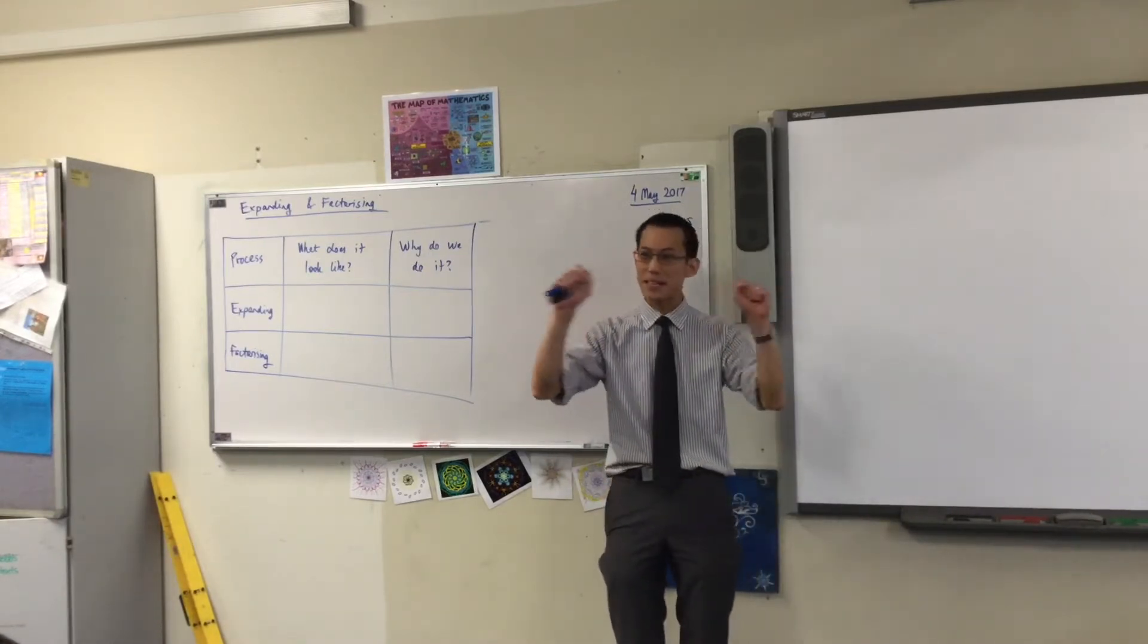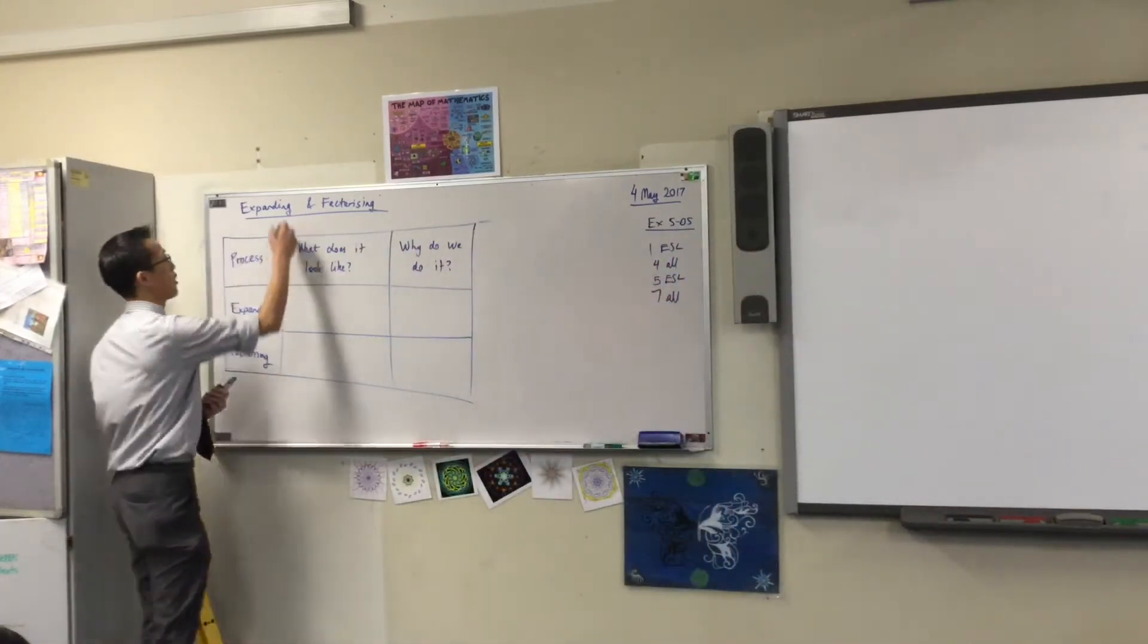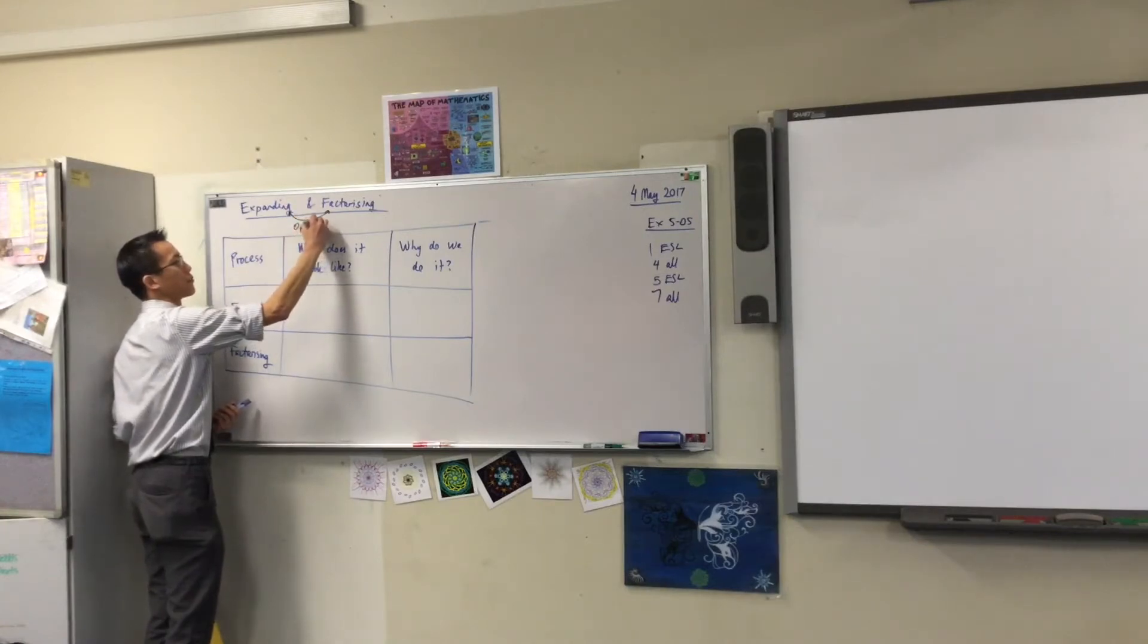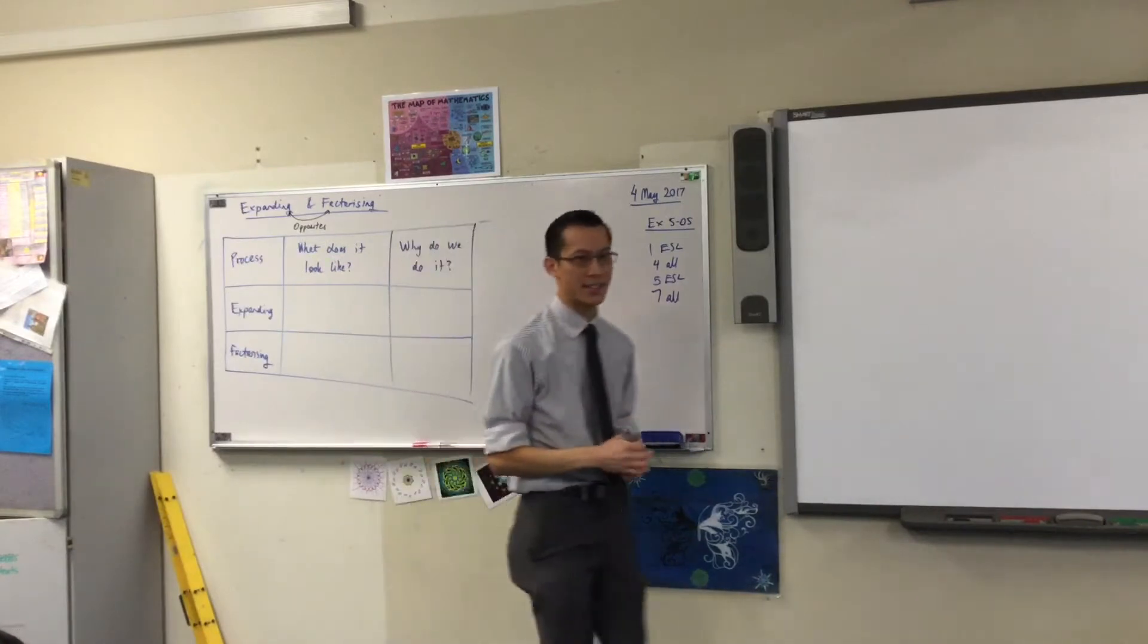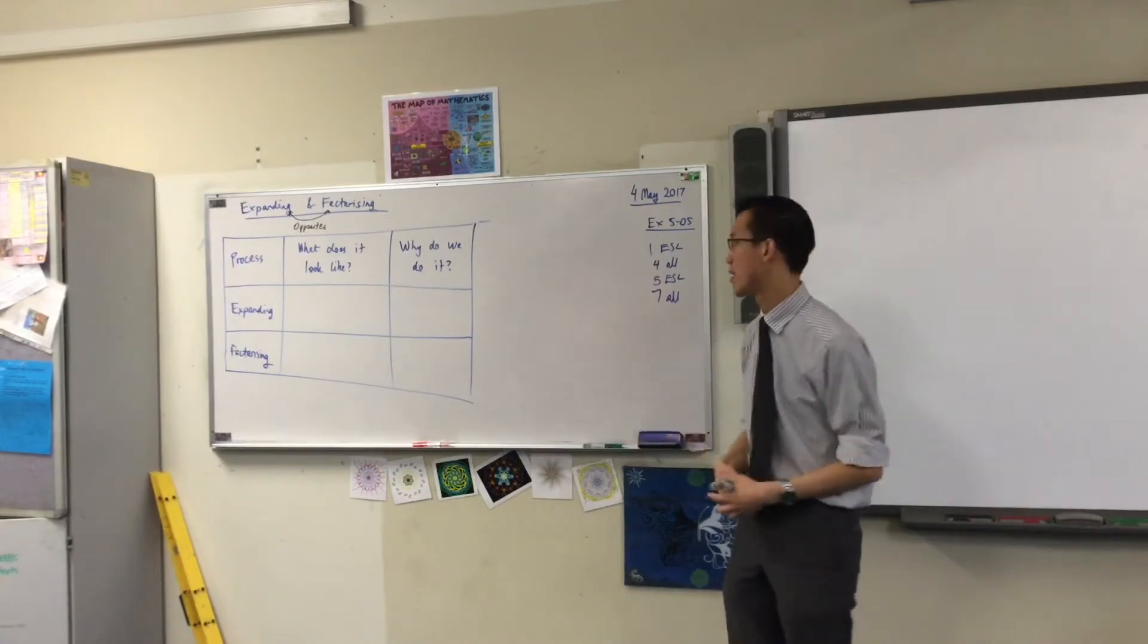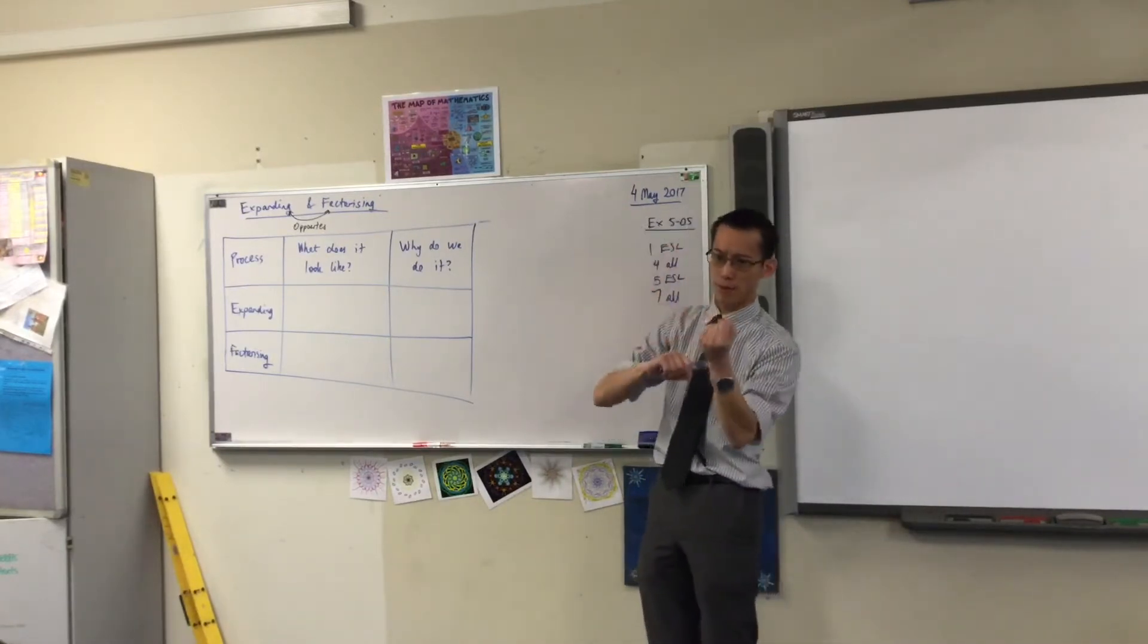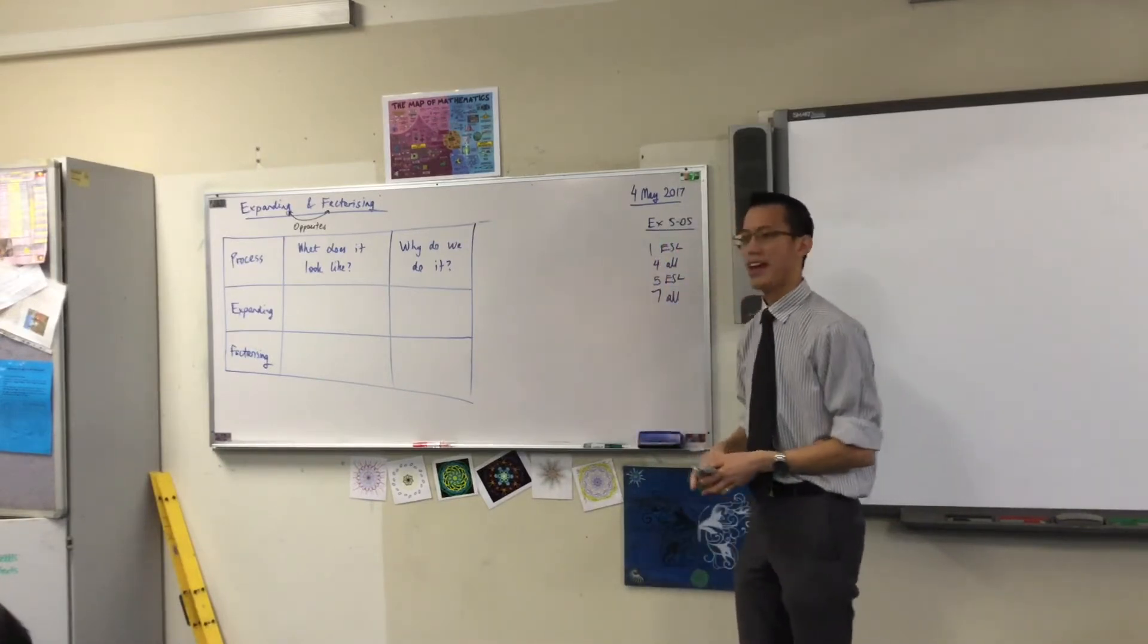The first thing to note is that the reason why we have these together is that these are two sides of the same coin. These are opposites. If something is factorized, then you can expand it, and if something is already expanded, you can factorize it. So these are really doing one operation or doing it in reverse, and that's why we think of them together. Let's start with the first one, expanding.